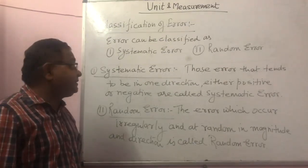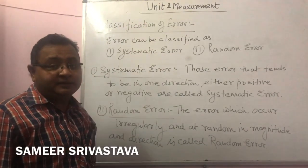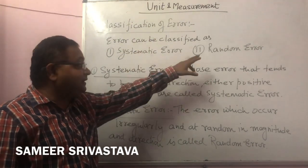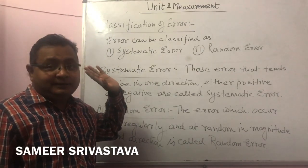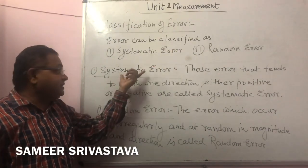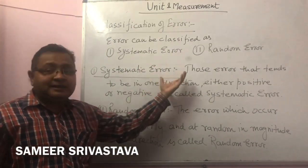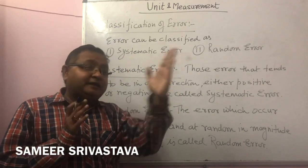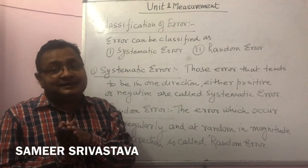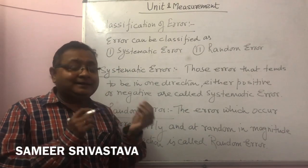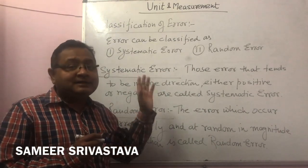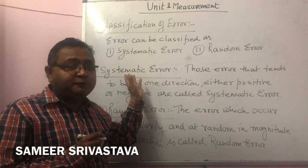The next topic is classification of error. We have classified error into two types: systematic error and random error. Those errors are called systematic which are in one direction — it means either the error is positive or the error is negative.